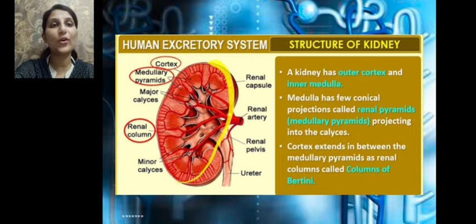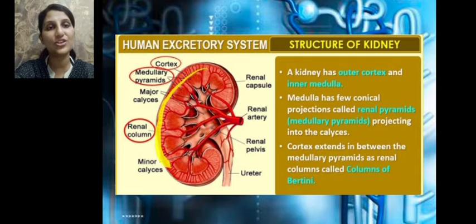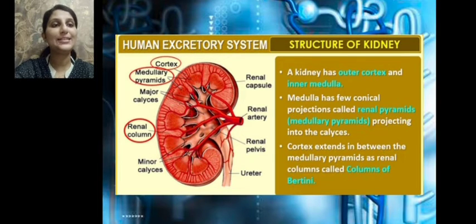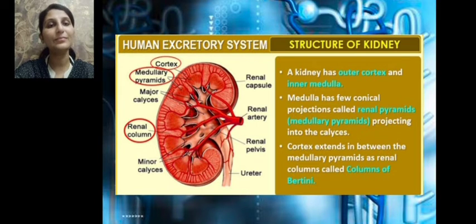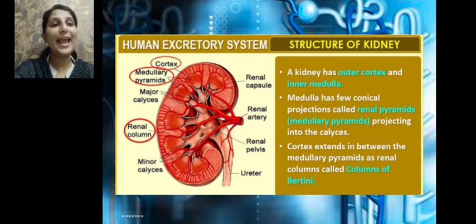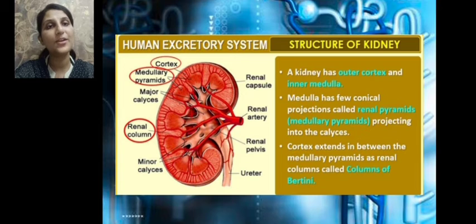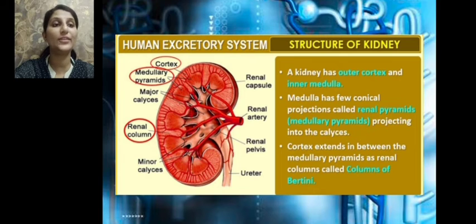If we take a cross-section, a kidney is differentiated into an outer cortex — the cortical region — and an inner medulla — the medullary region. The medulla has a few conical projections called renal pyramids, which project into the calyces. We can see these pyramids in the medullary region. The cortex extends in between the medullary pyramids as renal columns, also called columns of Bertin. These columns project inward from the cortical region into the medullary region.